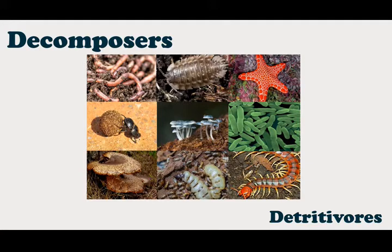Here you can see some examples of decomposers and detritivores which are helping in the recycling of nutrients in the ecosystem. We should be thankful to the decomposers and detritivores because they are the ones actually cleaning planet Earth — that is why they are called natural scavengers. They clean the Earth from dead and decaying matter. Without them, the whole world would have been covered with dead material from plants and animals and we could not even witness the soil. They add all that material back into the soil and form the most important connecting link in the cycling of nutrients in an ecosystem.